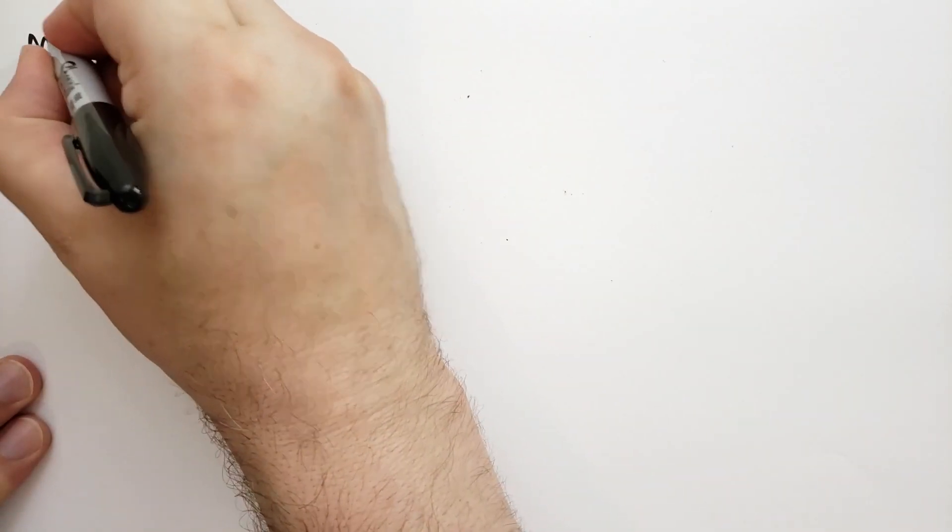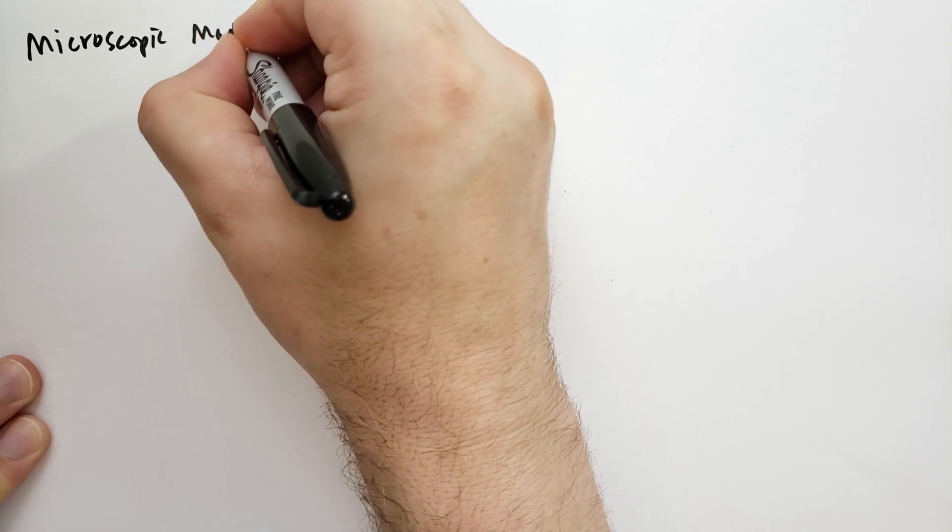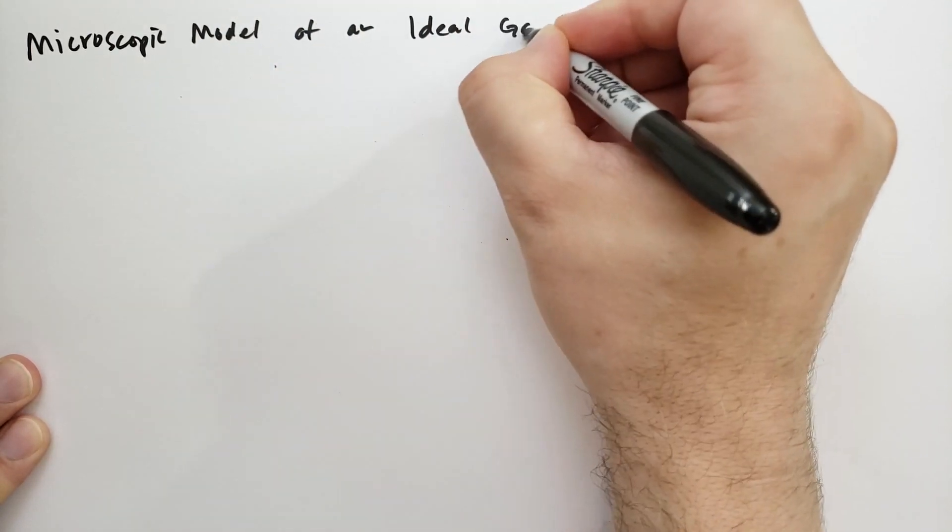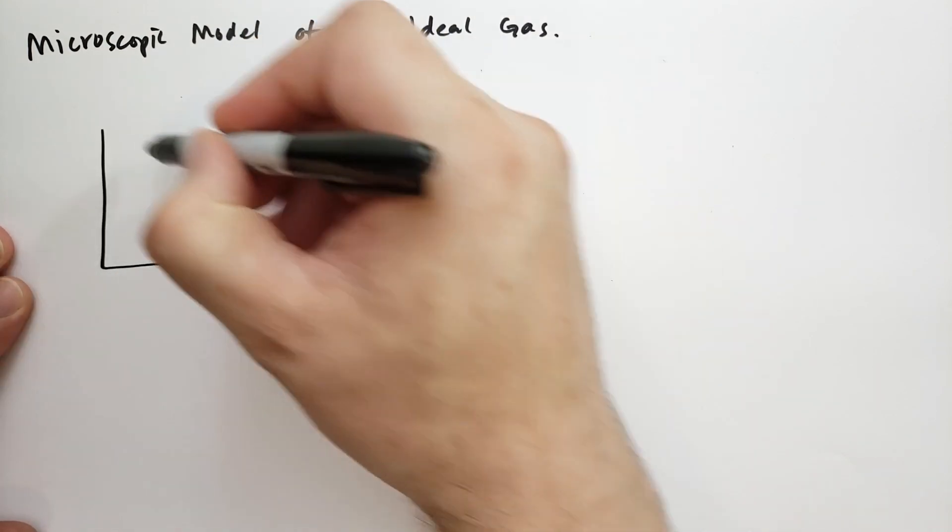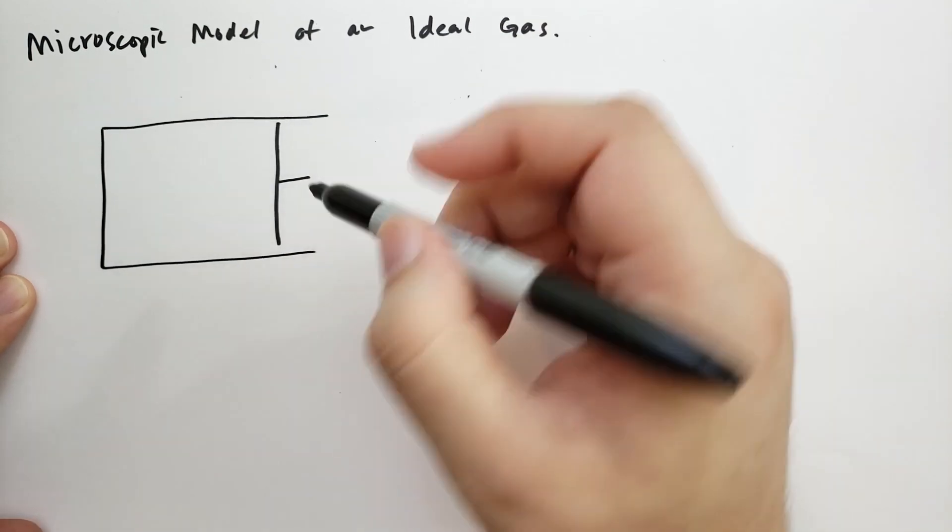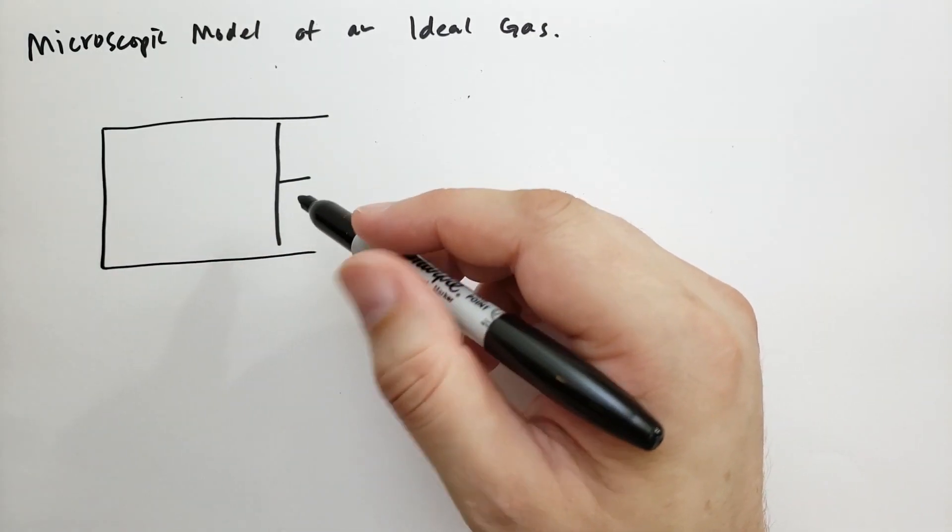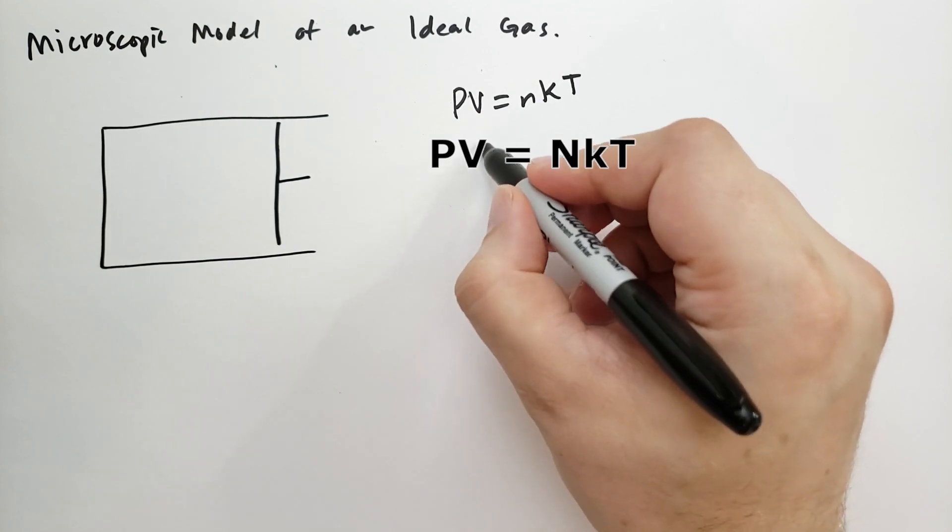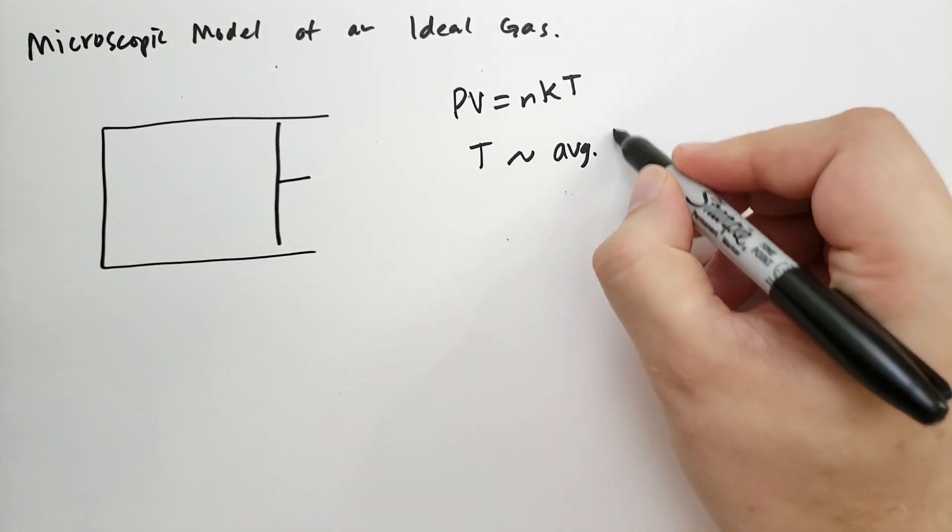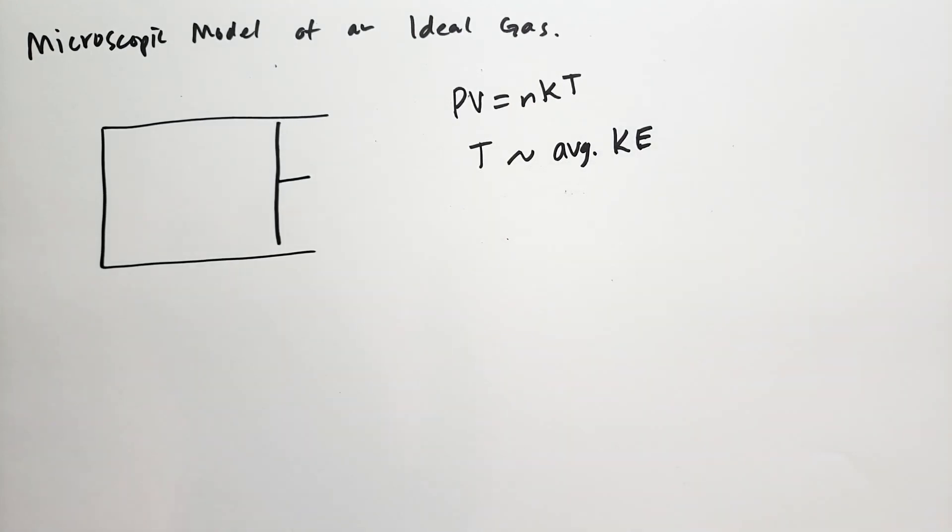Anyway, moving right along, let's talk about the microscopic model of an ideal gas. This one's fairly easy. It's a lot of text. I think Schroeder is fairly aggressive in trying to explain everything that he does. I don't know that other textbooks are so precise, but let's walk through what he does. So he says we have a cylinder, and the cylinder is sealed on three sides, and then we have a piston.